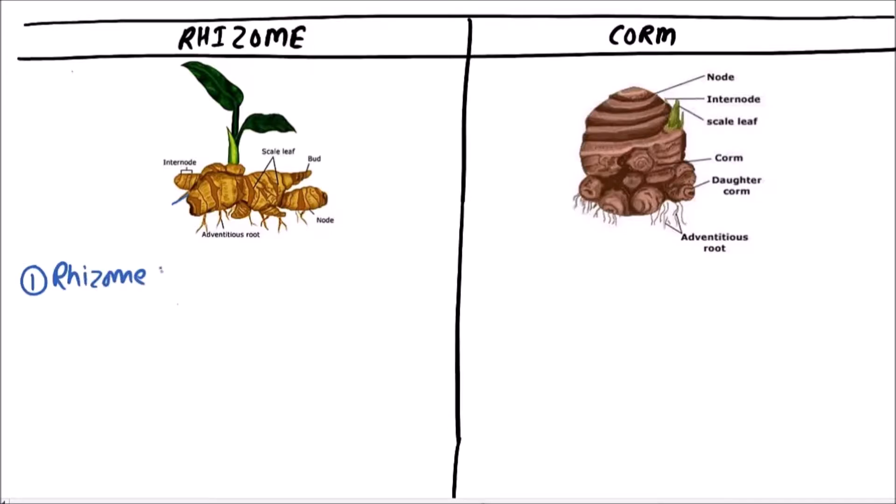A rhizome is elongated or stumpy. Stumpy means short and thick, while a corm is always short and thick.